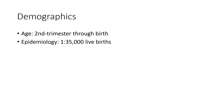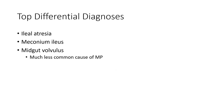Timing: second trimester through birth. Epidemiology: 1 in 35,000 live births. Top etiological causes include ileus atresia, meganium ileus, and volvulus — much less common cause of meganium peritonitis.